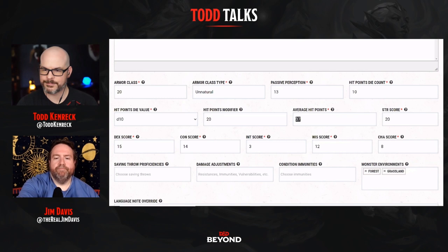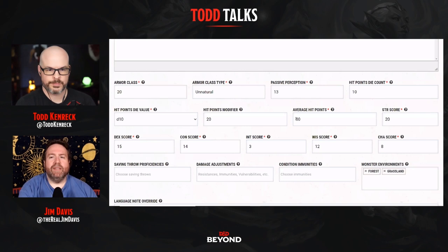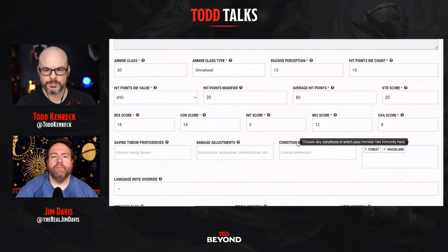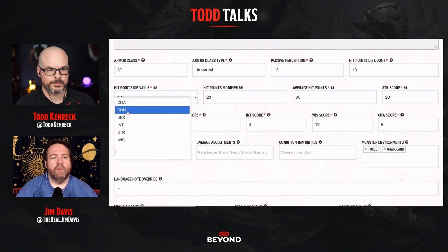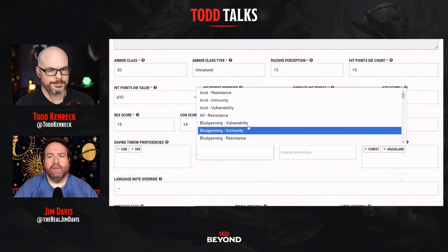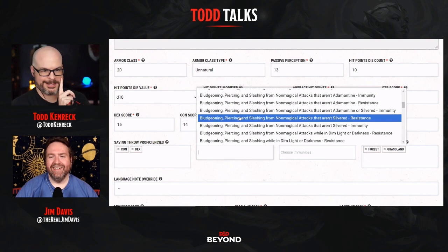Now let's start adding saving throw proficiencies. I'll give it a Constitution saving throw and a Dexterity save, and then an array of skills. You can really mess with how the monster gets attacked this way. Given its toughness, immunity would be cruel — but resistance to bludgeoning, piercing, and slashing from non-magical attacks effectively doubles those average hit points for most creatures it'll fight. That's very powerful.